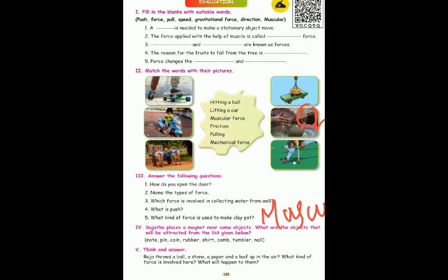Fourth Roman: Sujatha places a magnet near some objects. What are the objects that will be attracted from the list given below? Objects that attract the magnet: pin is metal, so metal is attracted. Coin — magnet attracts coin. Nail attracts. Rubber, combs — these may or may not attract depending on material.